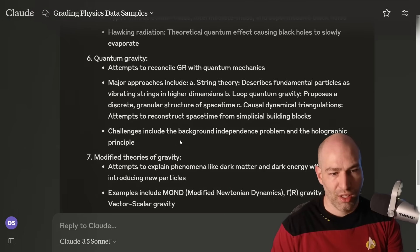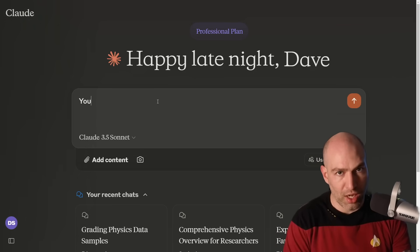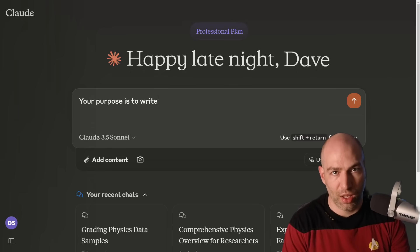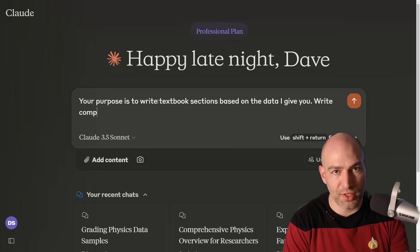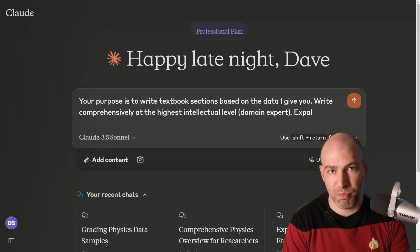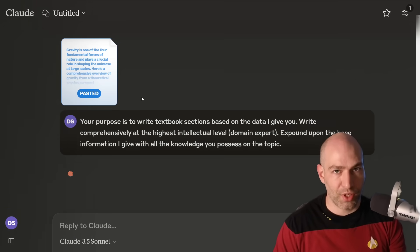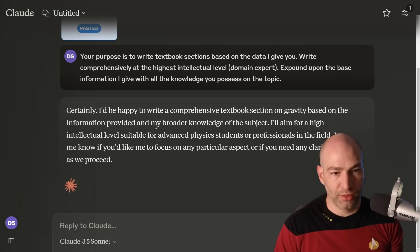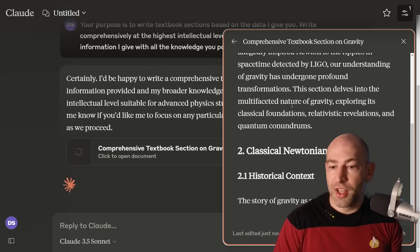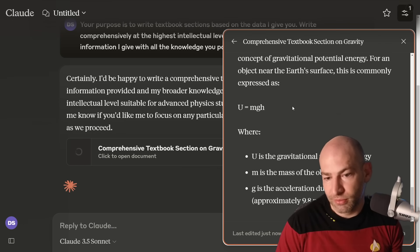So actually let's do this as an experiment. So I will create another chat and I say, okay, your purpose is to write textbooks, textbook sections based on the data I give you. Write comprehensively at the highest intellectual level. So let's do this as an example - domain expert, expound upon the base information I give you with all the knowledge you possess on the topic. So then there might be a fourth model, which is just, this is just the drafter. And so let's see what it does. Certainly, I'd be happy to blah blah blah. And then, actually it's Claude so it's generating an artifact. So here we have it. It's actually generating the chapter for us.